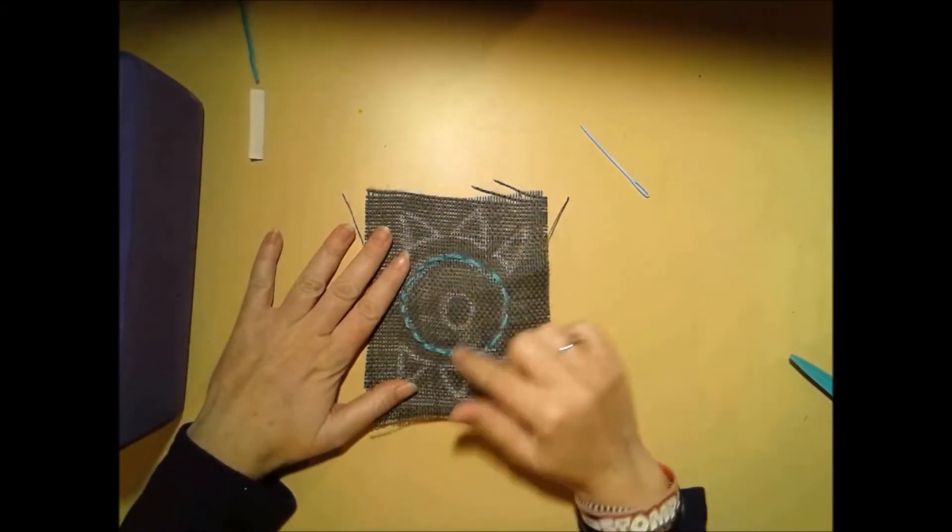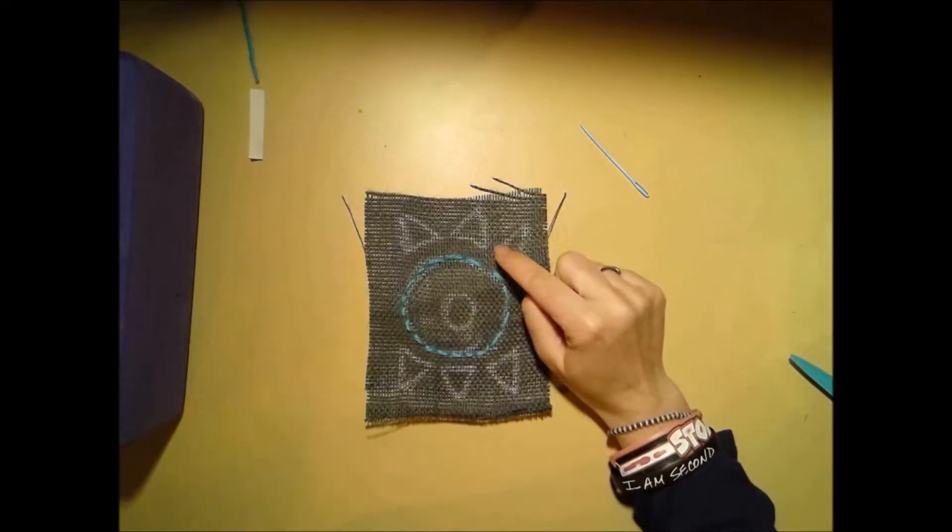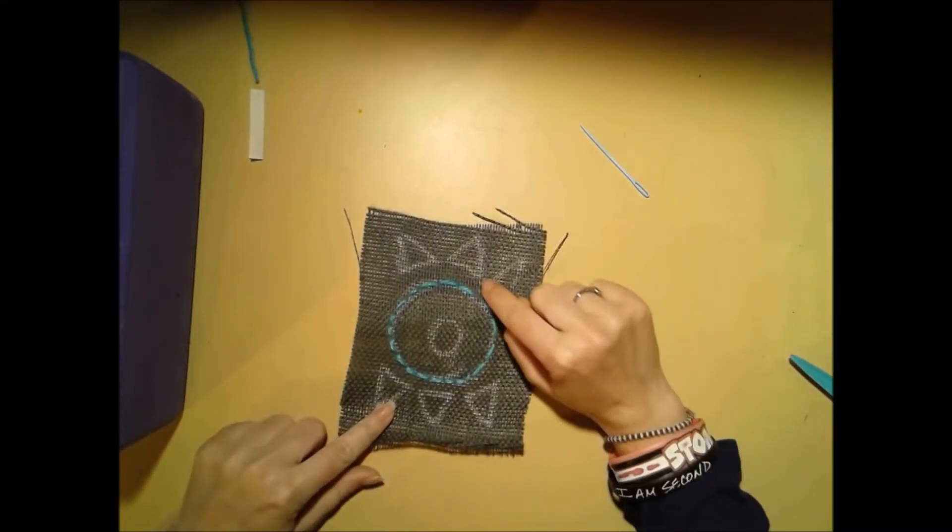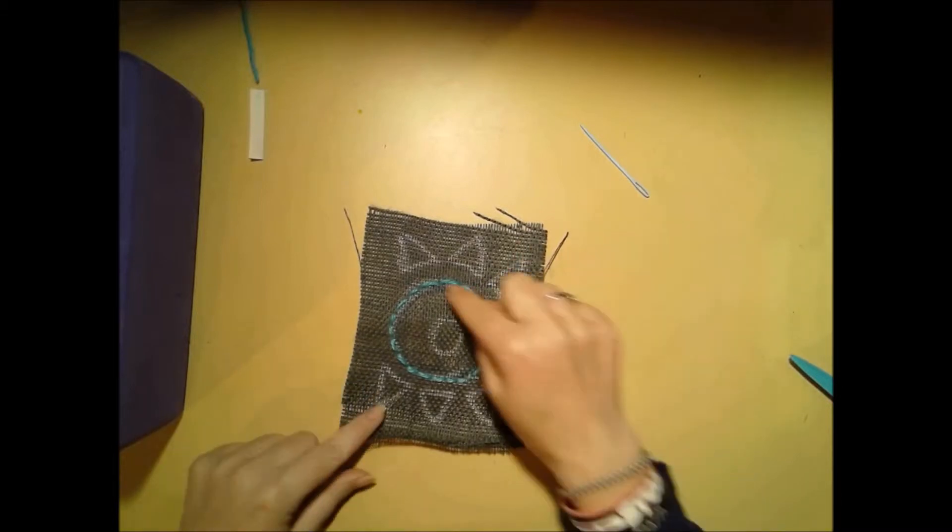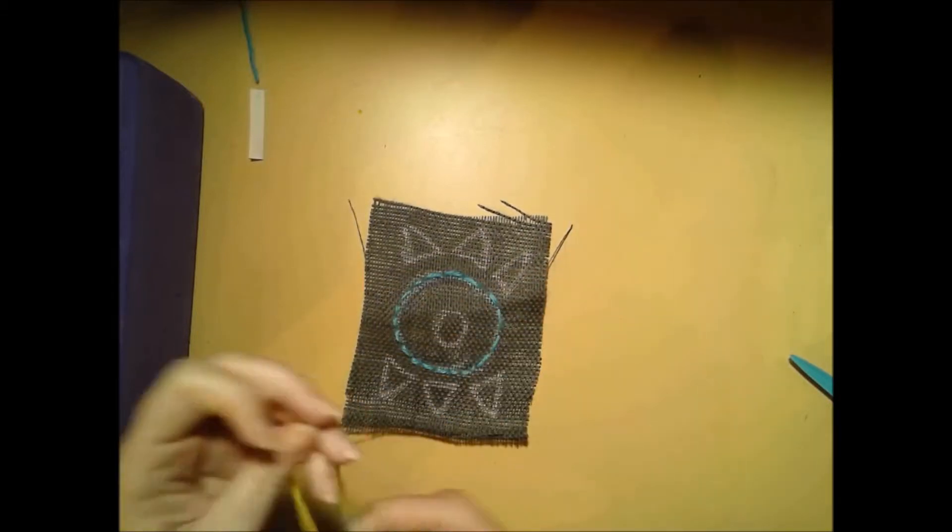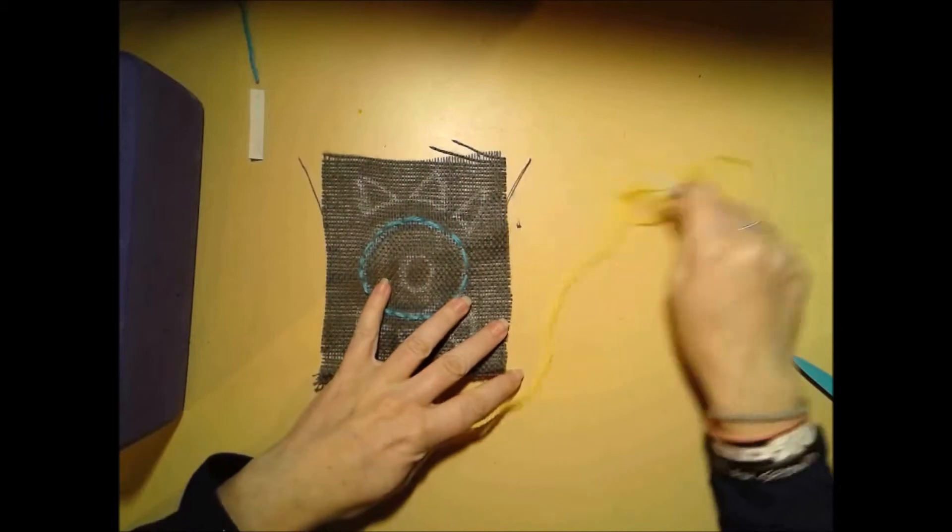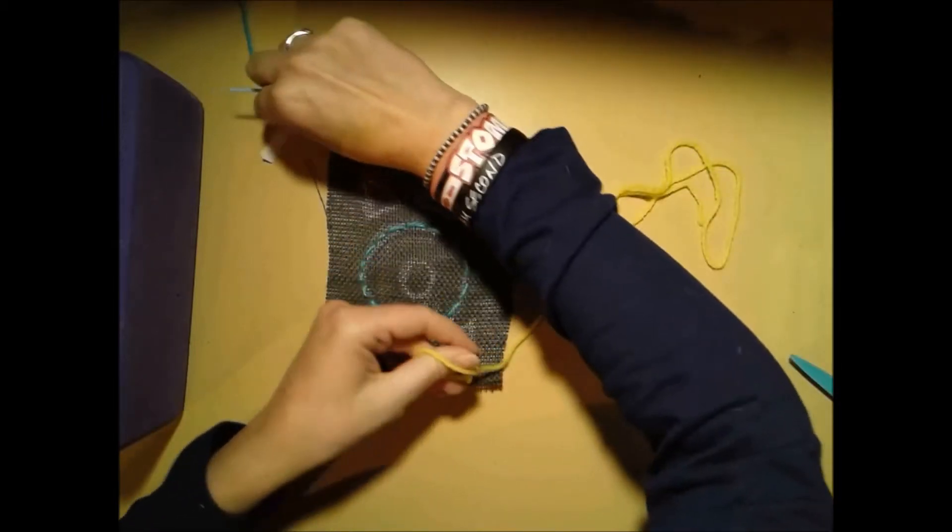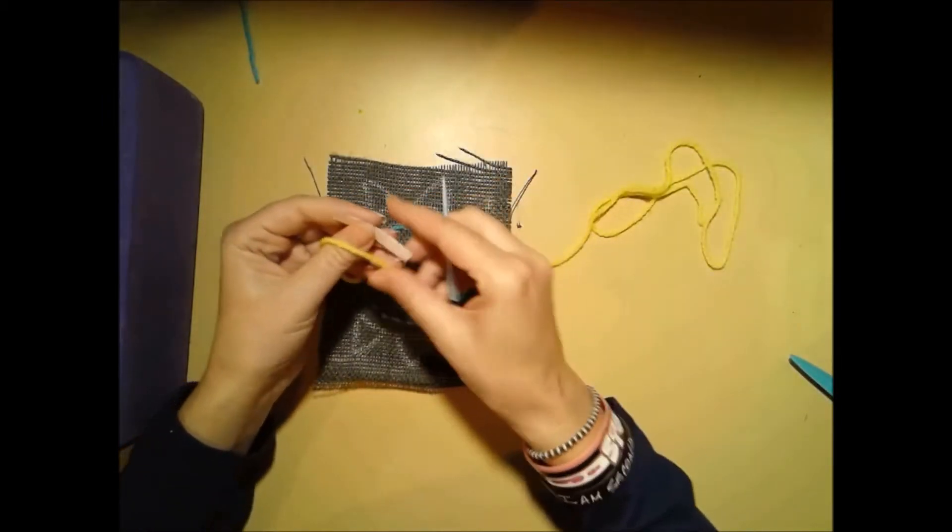So now I've got that part traced. If I wanted to color in some of these shapes, right now that's just a line. I'm going to try to color in some of these shapes using a satin stitch. I'll show you how to do that.